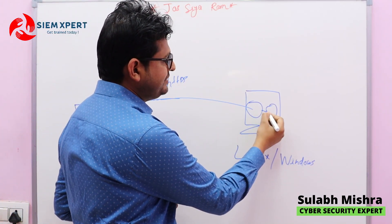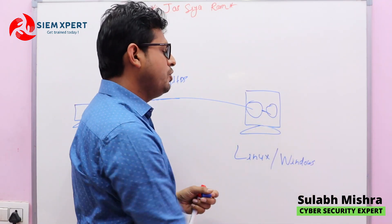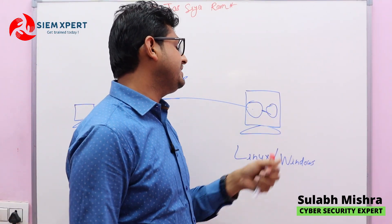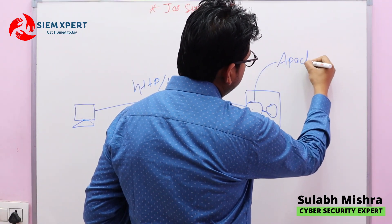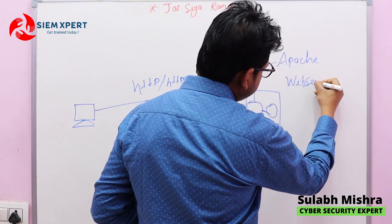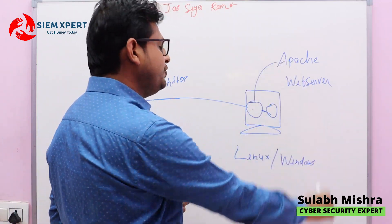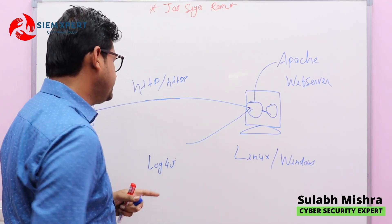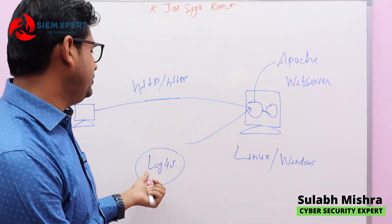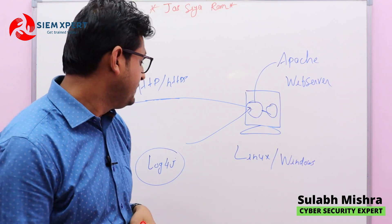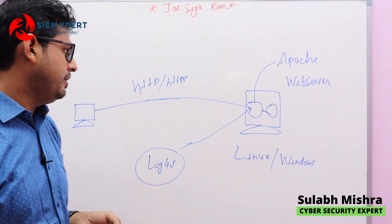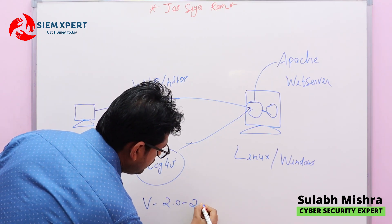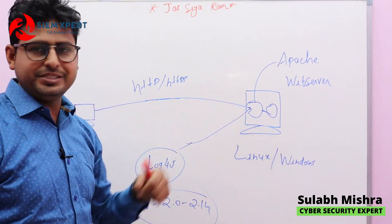The web server takes the HTTP or HTTPS request from the end user, and you integrate your web server with the application, so it receives the request, sends it to the web application, retrieves the data, and sends it back to the end user. If you are using Apache as your web server, inside that Apache web server there is a small application called Log4j, used to record the activity logs. If the Log4j version is between 2.0 and 2.14, there is a vulnerability present.